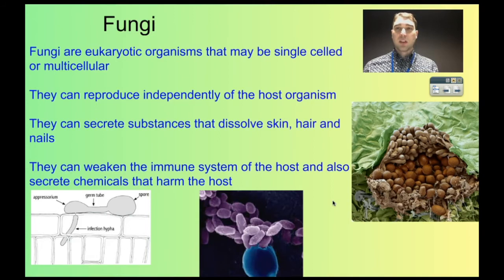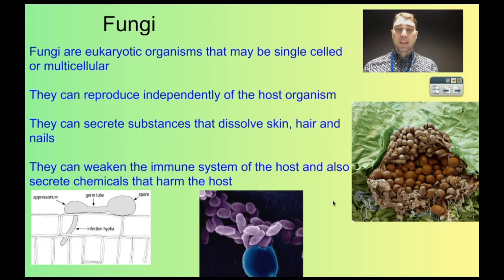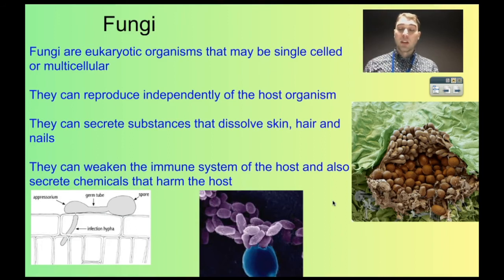Now we're going to look at some pathogenic fungi. Fungi are eukaryotic organisms; they can be single-celled or multicellular depending on the species, and they reproduce independently of their host. The way fungi work is they secrete substances that dissolve their environment and then take in the compounds to build themselves. When they infect organisms they can weaken the immune system of the host, and they can also secrete chemicals that harm the host.